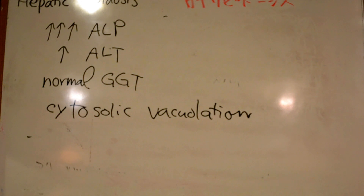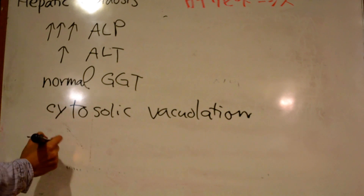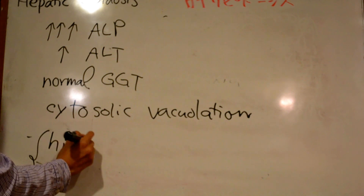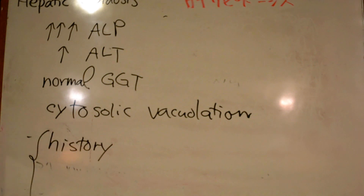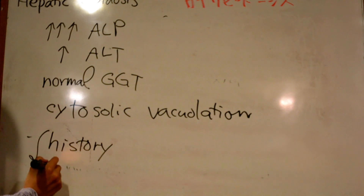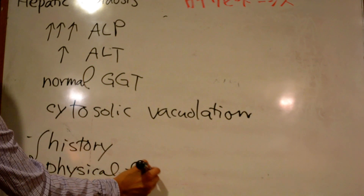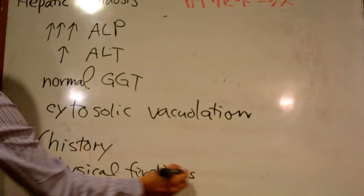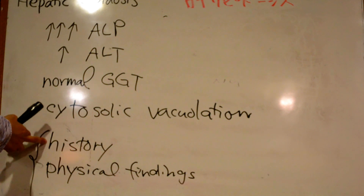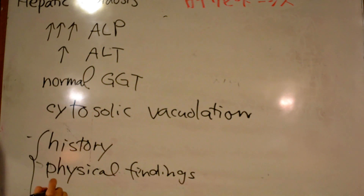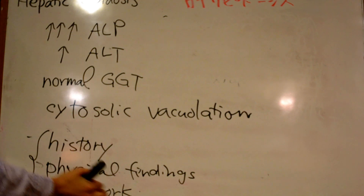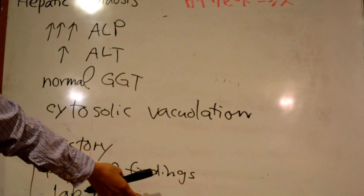So in practice, the history and physical findings and suggestive lab work strongly support the diagnosis of hepatic lipidosis. History of a fat cat that stopped eating, physical findings, and lab findings such as increased ALP but normal GGT will support the diagnosis.